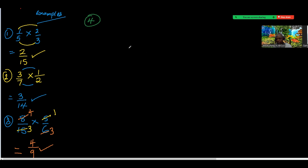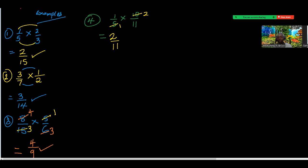Number four: 1 over 5 times 10 over 11. Is there any number common? 5 can divide 10 — 5 into 5 is 1, 5 into 10 is 2. What remains is 1 and 2 at the top, and 1 and 11 at the bottom, which gives 2 over 11.